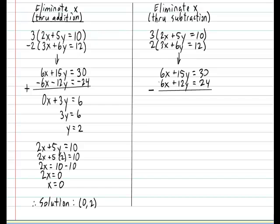I'm going to put subtract over here, and watch how the subtraction happens. 6x minus 6x is 0x. 15y minus 12y gives me 3y. And 30 minus 24 gives us 6. Take a look. The same magic happens. We have 3y is equal to 6. Therefore, y is equal to 2.